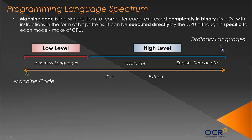If we talk about the spectrum, at one end we have ordinary languages — we have English — and at the other end we have machine code. This is just an example; you wouldn't take it too literally. English isn't really a type of programming language, though you could argue it is. So you have low-level programming languages and high-level programming languages.